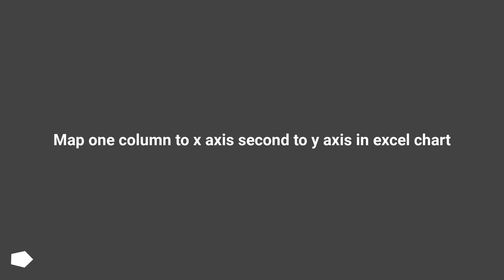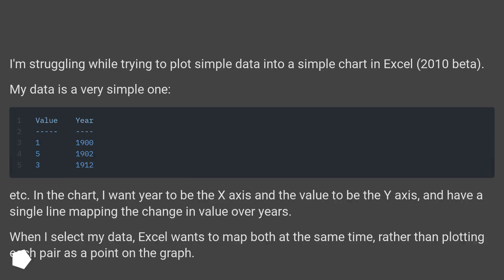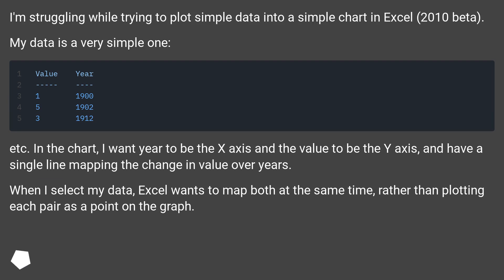Map the 1st column to the x-axis and the 2nd to the y-axis in an Excel chart. I'm struggling while trying to plot simple data into a simple chart in Excel 2010 beta. My data is a very simple one.